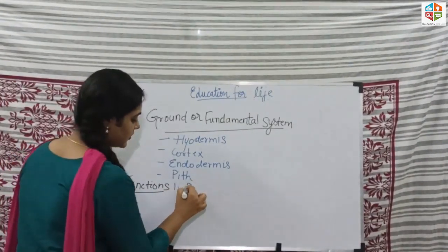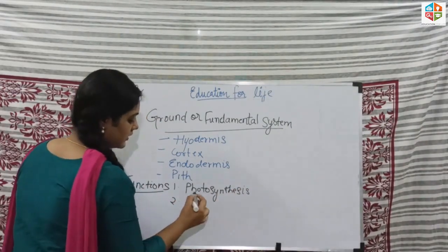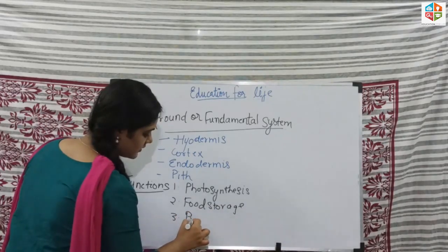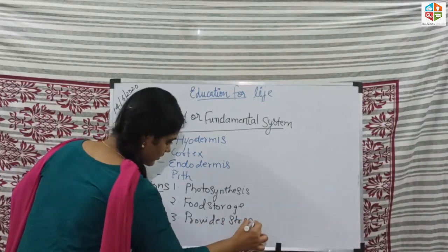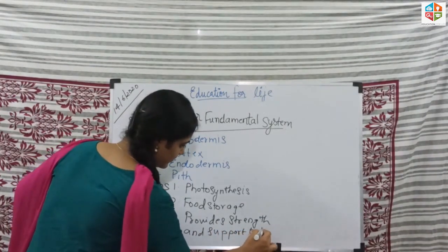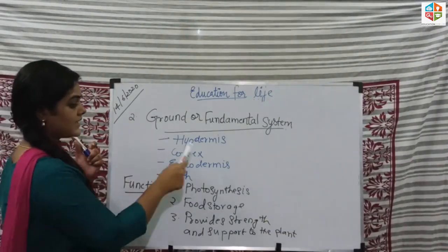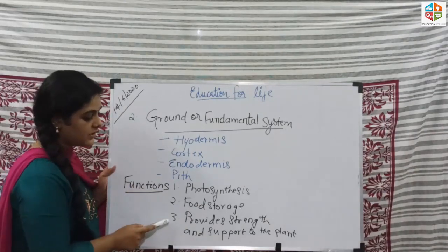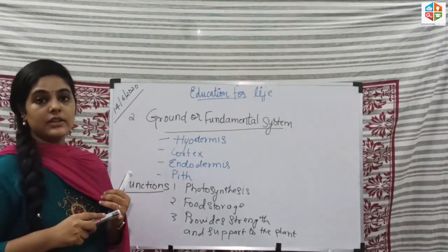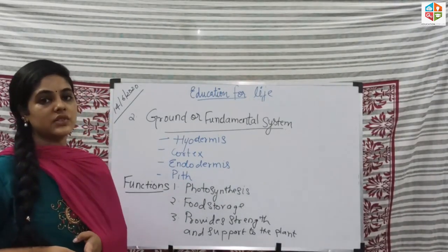The functions of ground tissue: first is photosynthesis, then food storage. Ground tissue also provides strength and support. The cortex helps in food storage, hypodermis provides strength and support to the plant. Overall, ground tissue consists of parenchyma, collenchyma, and sclerenchyma cells, and parenchyma cells also help in the synthesis of food.